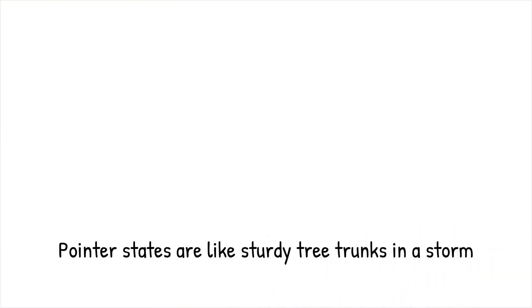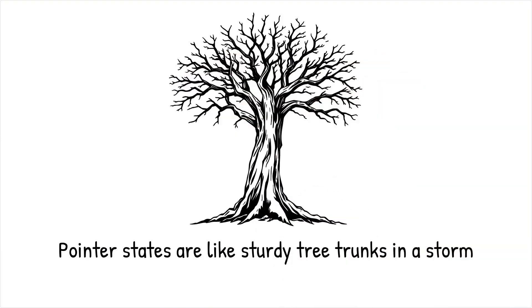Analogy: Imagine a sturdy tree in a storm. While weak branches break under the force of wind, the trunk remains intact and continues to thrive. Similarly, pointer states are the unshakable trunks of quantum systems.